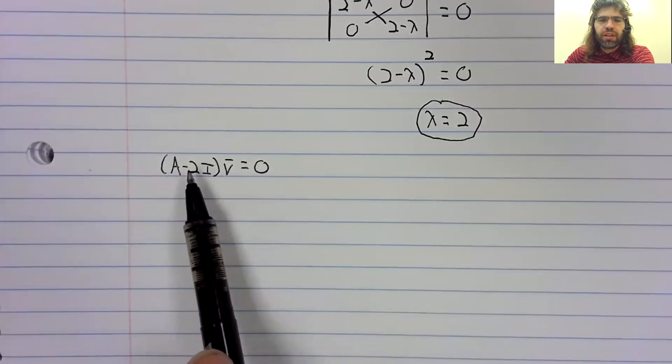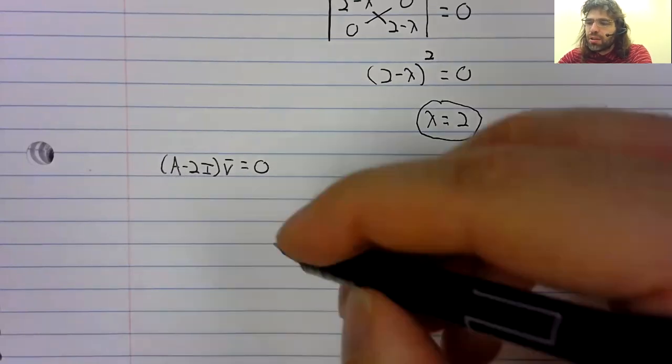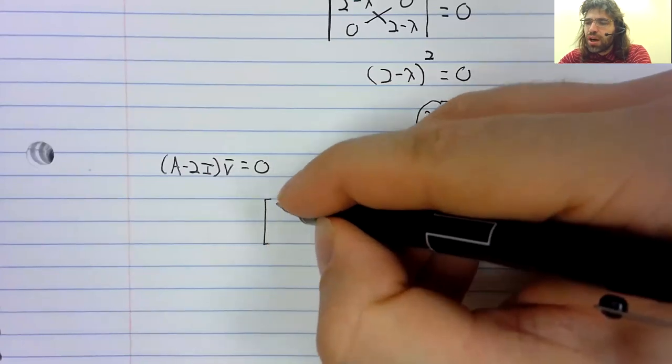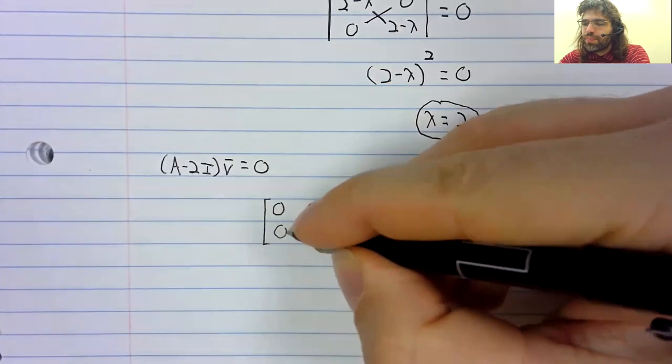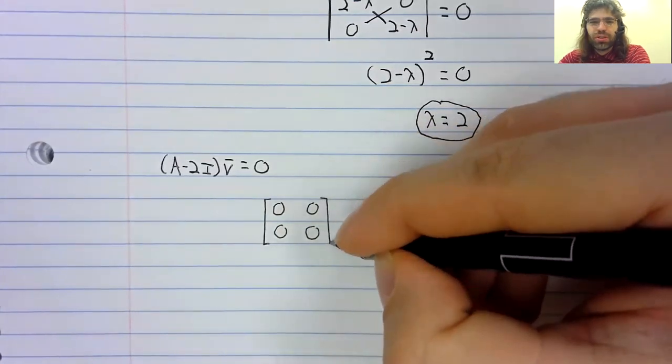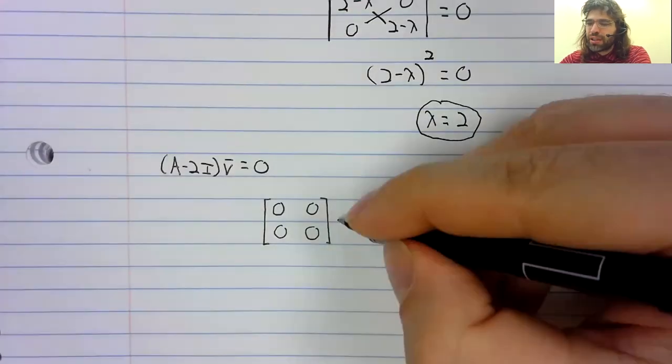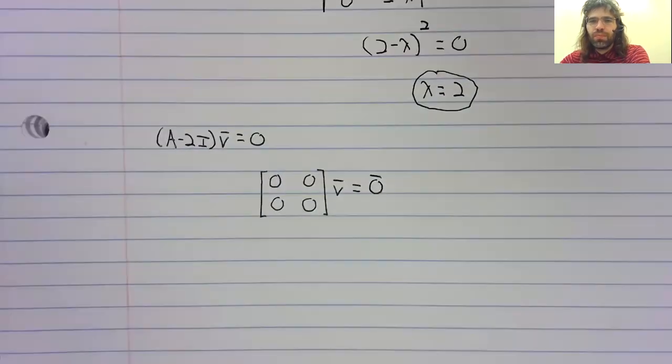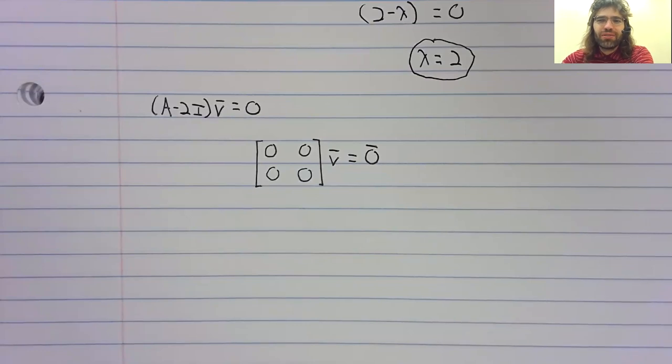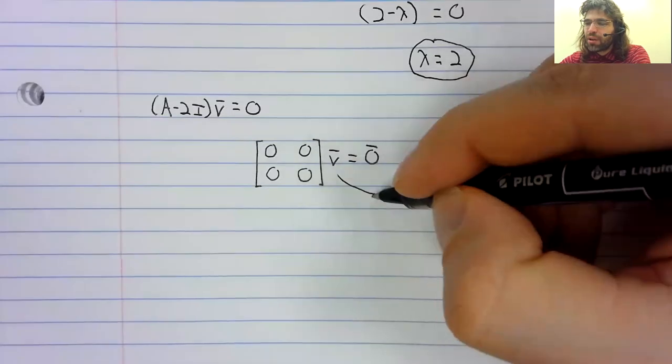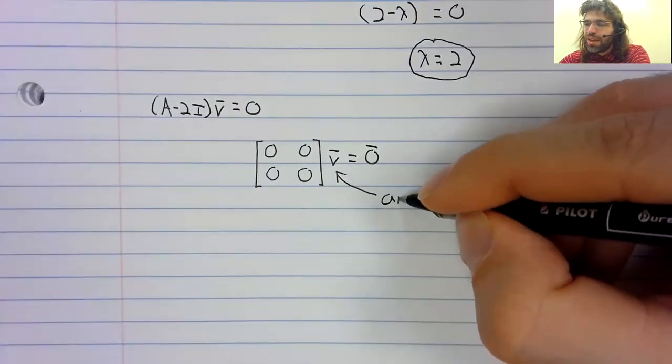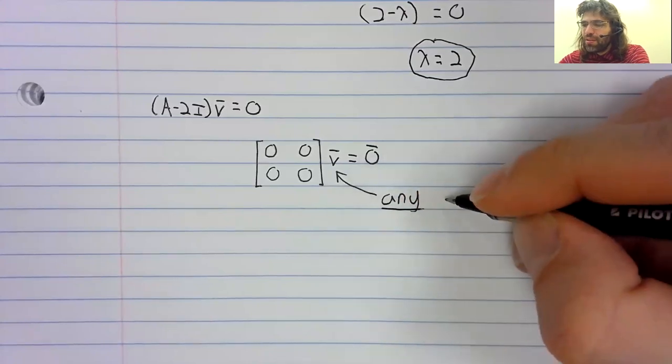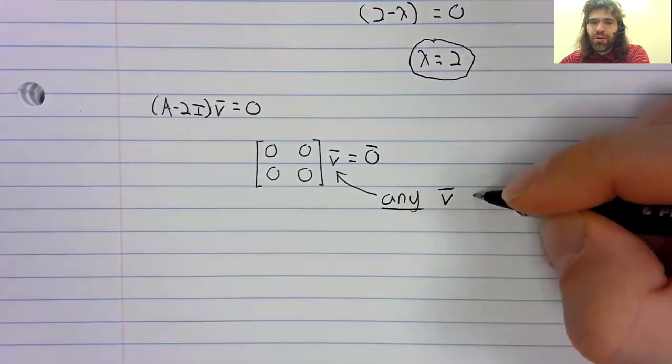We do that by solving this equation. Well, A minus 2I turns out to be the zero matrix, though. So we're solving this matrix equation, and we don't even need to go to our calculator and use the RREF command; any V works.